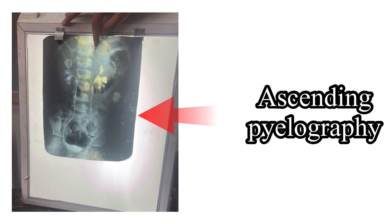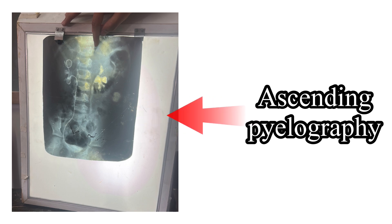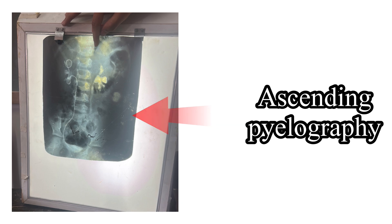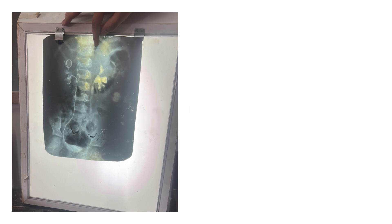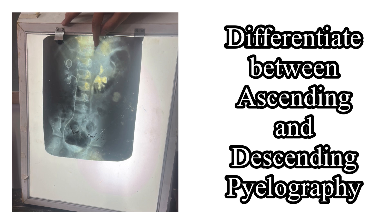The X-ray seen here is that of ascending pyelography, also known as retrograde pyelography. The dye is injected directly into the ureter through a ureteric catheter, which is guided through a cystoscope. To differentiate between ascending and descending pyelogram: in ascending pyelogram, only one pelvis is outlined, and the catheter used is clearly visible in the X-ray, as seen on the screen.